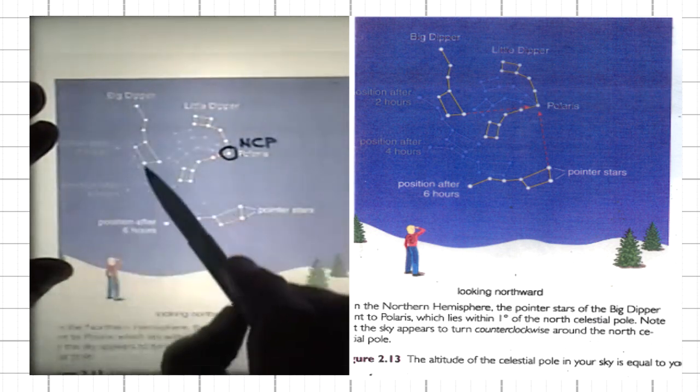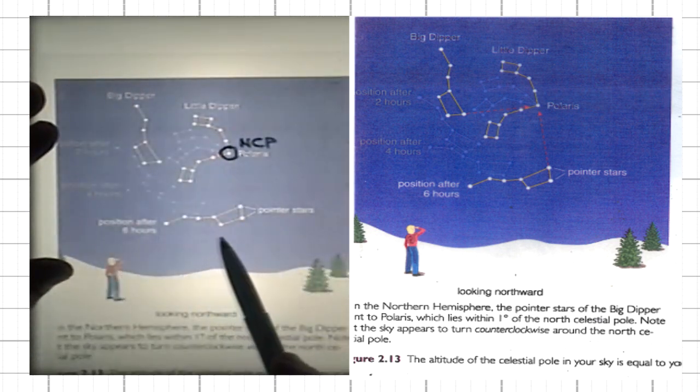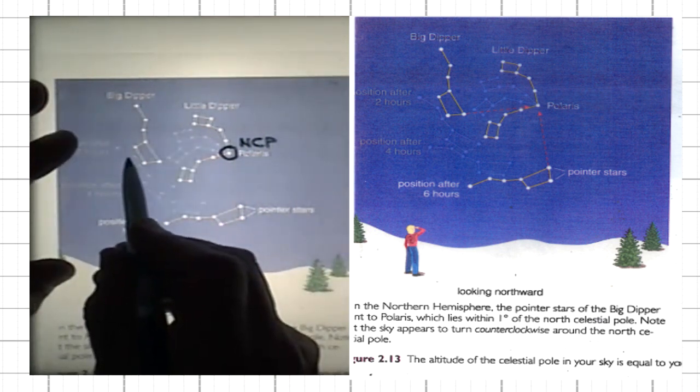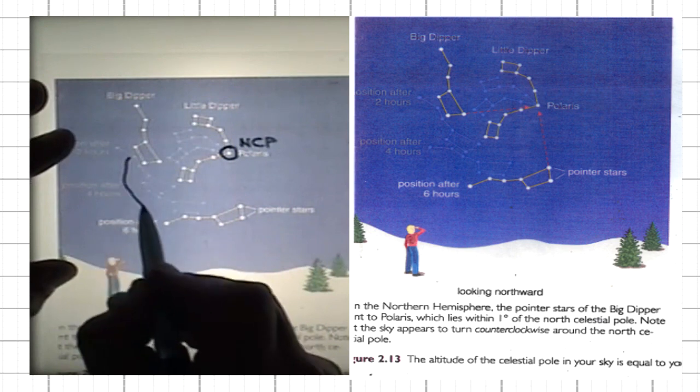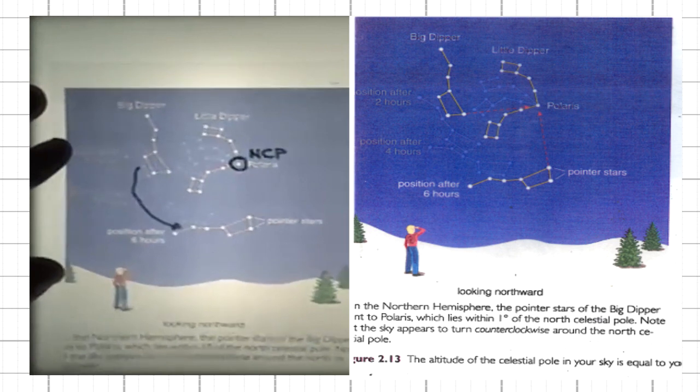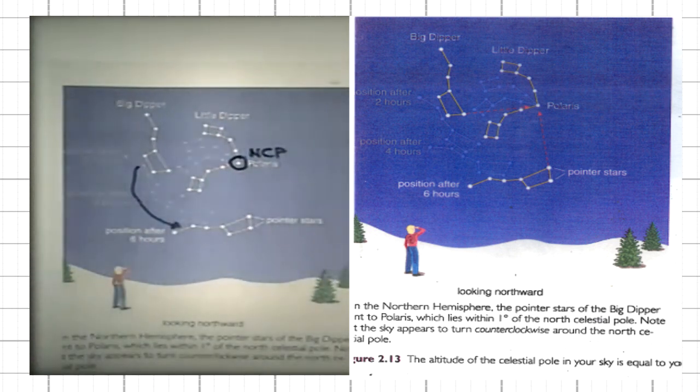Big Dipper at one moment. Here is the Big Dipper six hours later. It has moved in six hours from this location to this location. How big is this angle? It's 90 degrees.